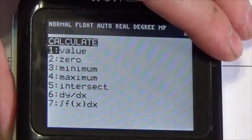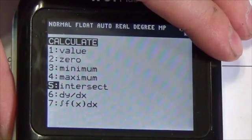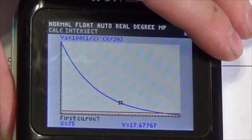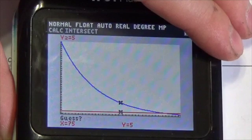So second, trace to get into the calc menu. Intersect here. Is it on the first curve? Yep. Did it jump to the second curve? Yep. Is it okay to guess 75.5? Yep.